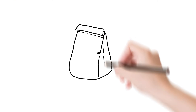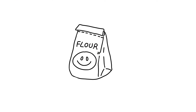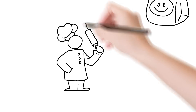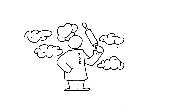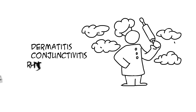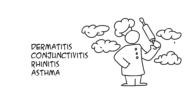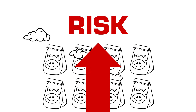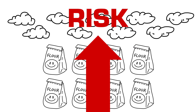Now, let's look at the opposite case. Flour would not be considered by many to be a hazardous substance. However, if a baker were to be exposed over a period of time to airborne flour, he or she could develop dermatitis, conjunctivitis, rhinitis and even asthma. So even something that is considered a low hazard can present substantial risk, and vice versa.